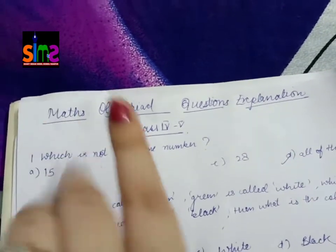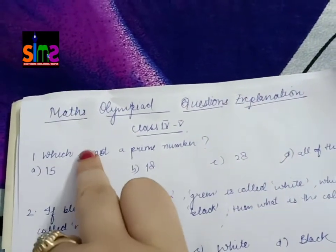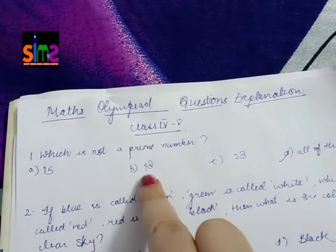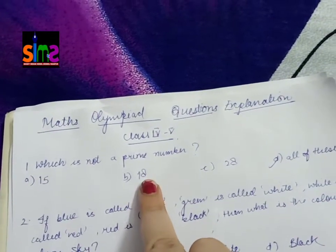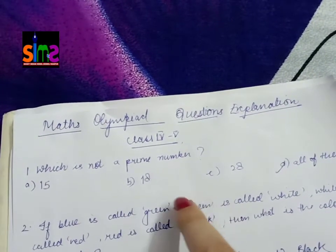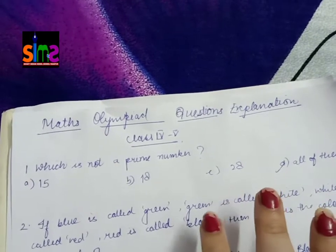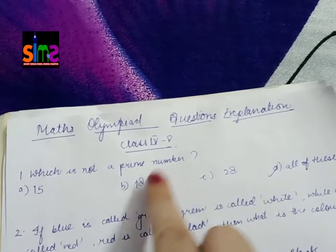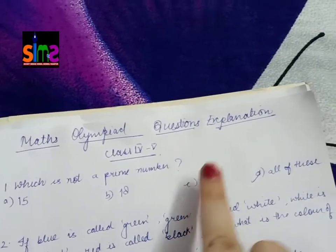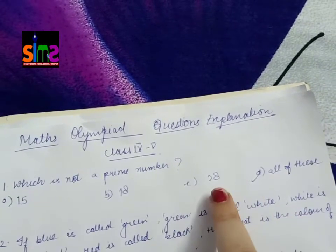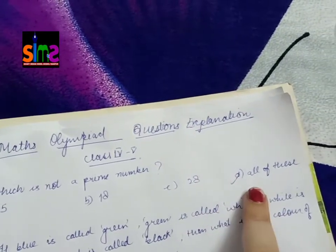But wait, you have to check all options before marking. 15 is not a prime number, that means this could be our option. 18 is an even number, and except for 2, all even numbers are composite numbers. So this is also not a prime number. 28 is also an even number, also a composite number, not a prime number.